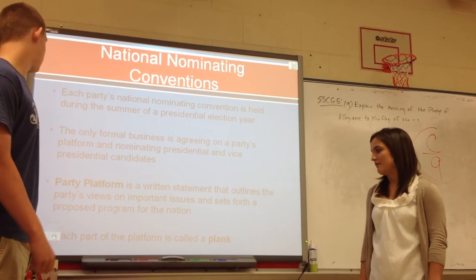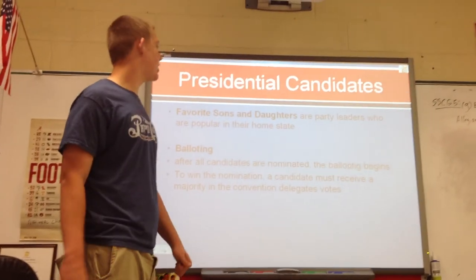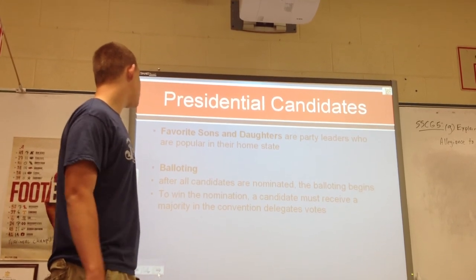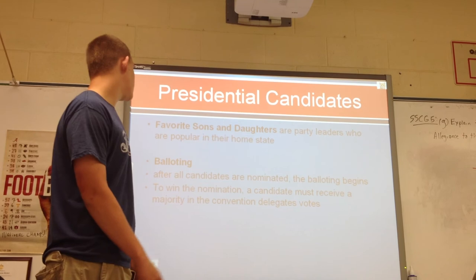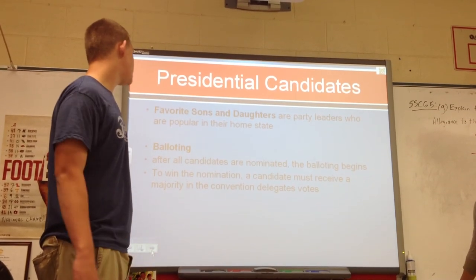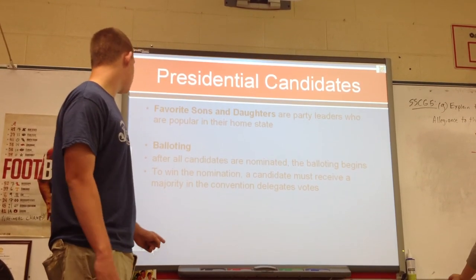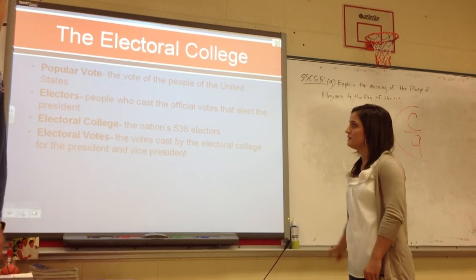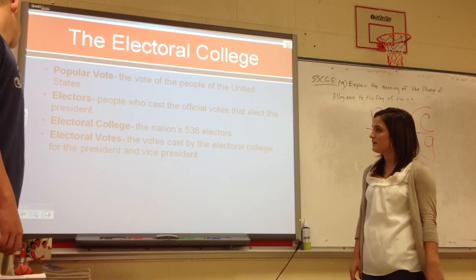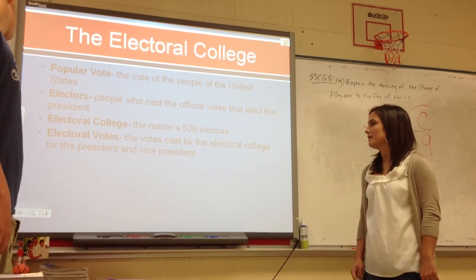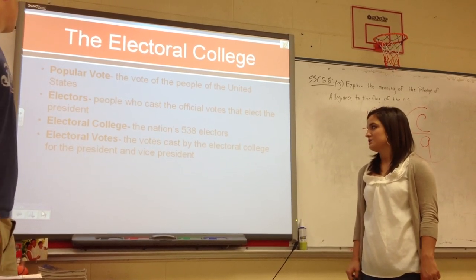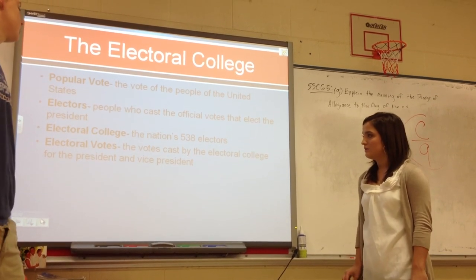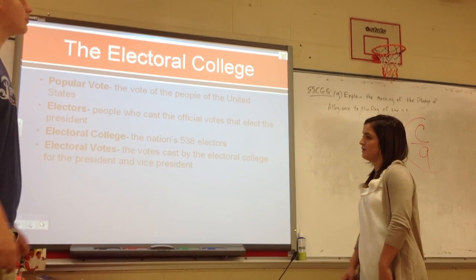Each part of the platform is called a plank. Favorite son candidates are party leaders who are popular in their home states. After all candidates are nominated, the voting begins. To win the nomination, a candidate must receive a majority of the convention delegates' votes. The popular vote is the vote of the people, while electors are people who cast the official votes that elect the president. The electoral college consists of the nation's 538 electors, and electoral votes are the votes cast by the electoral college for president and vice president.